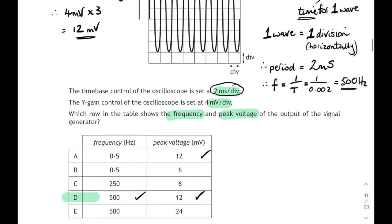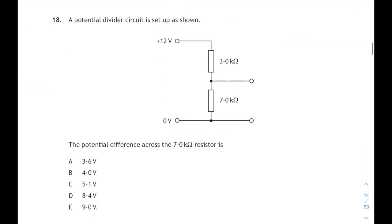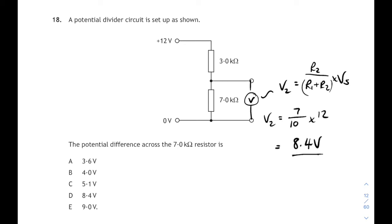Moving on, question 18. Question 18 is a voltage divider or potential divider. This is like a national 5 question. We have to work out the potential difference across the 7 kilo ohm resistor. That's the bottom resistor there. We can go straight to our national 5 relationship. We're working out one of the voltages in a series circuit. That relationship will be V2 equals R2 over R1 plus R2 times the supply voltage. Remember, you can still get asked national 5 questions in your higher paper. So 7 over the total resistance. Total resistance is 10 ohms. 7 over 10 times 12 is 8.4 volts. That's answer D.